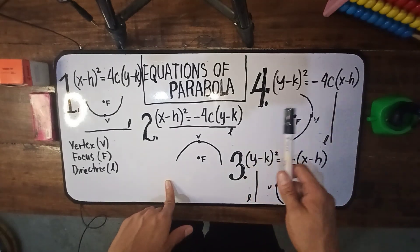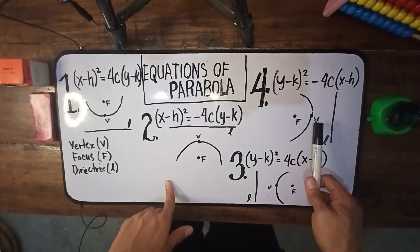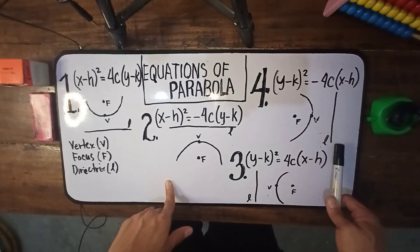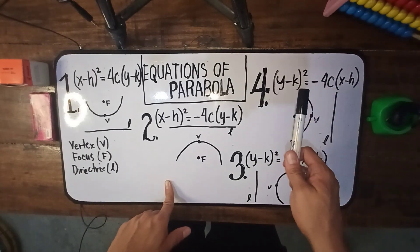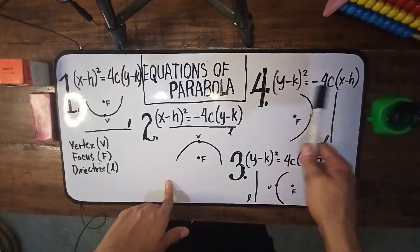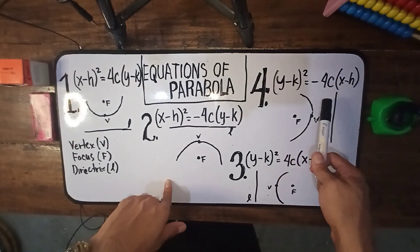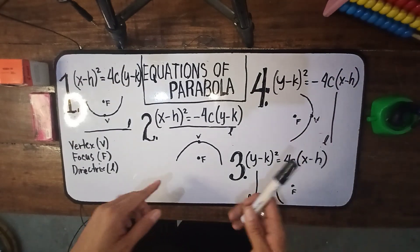Number four, opens to the left. Here's the focus, here's the vertex, and here's the directrix. The equation is (y minus k) quantity squared equals negative 4c times (x minus h).